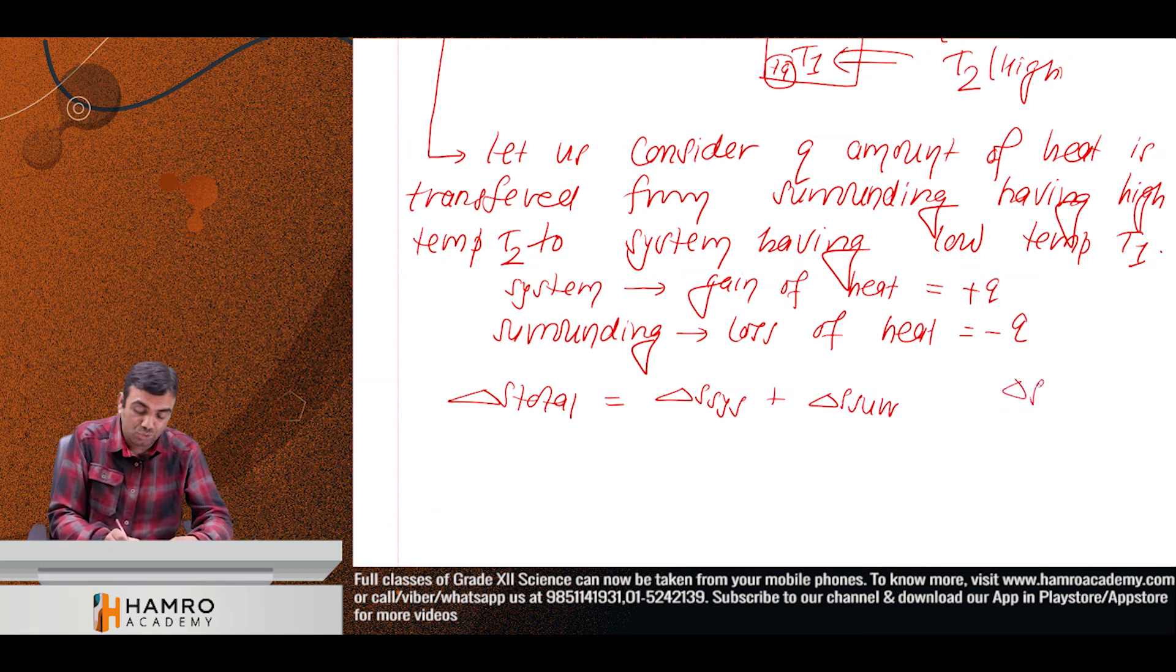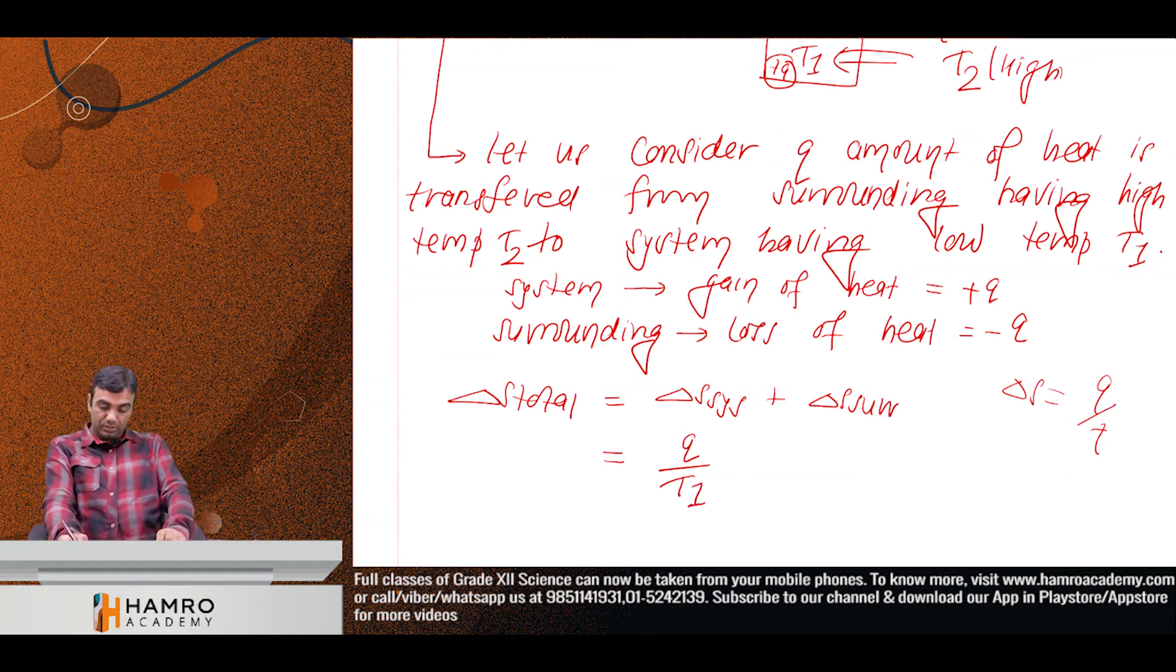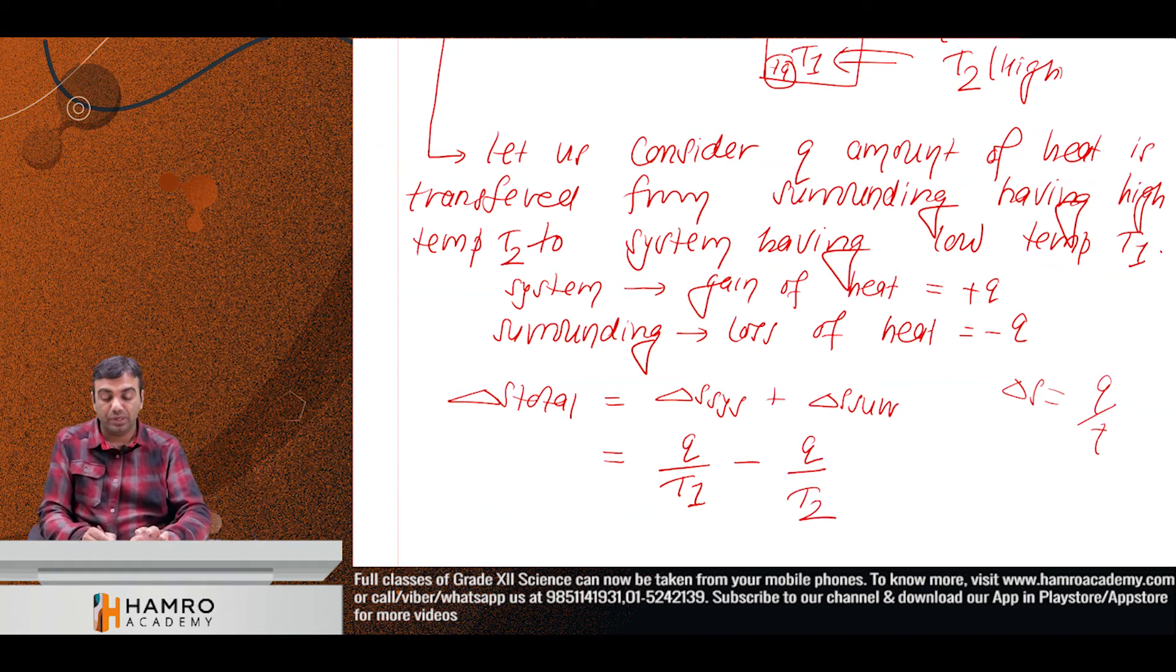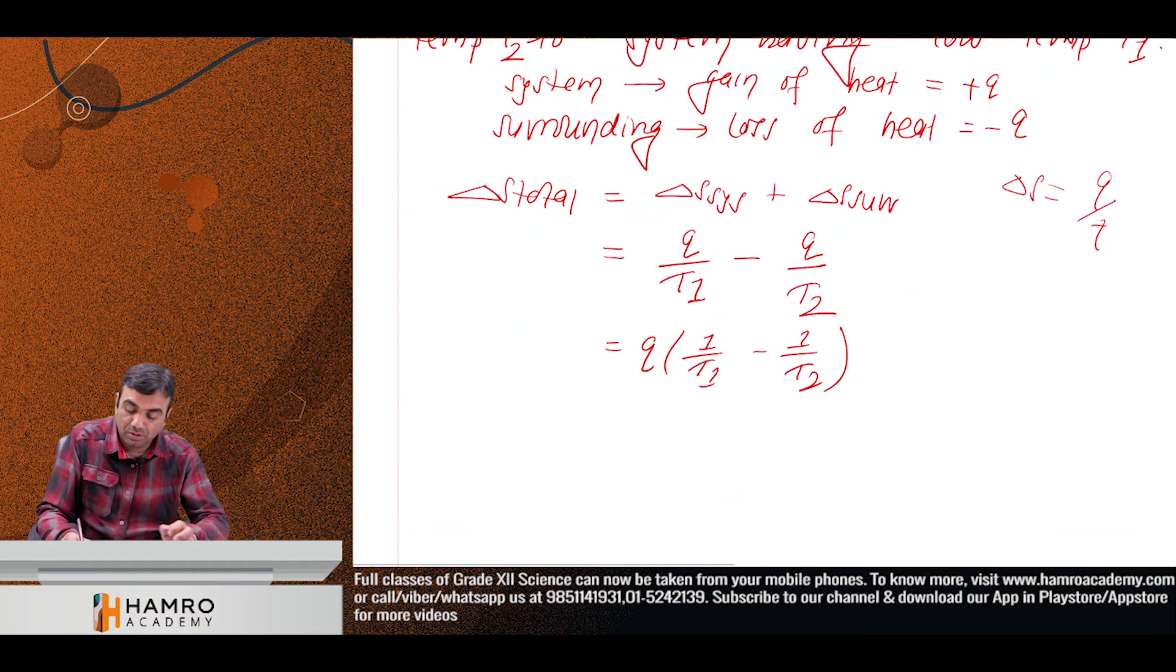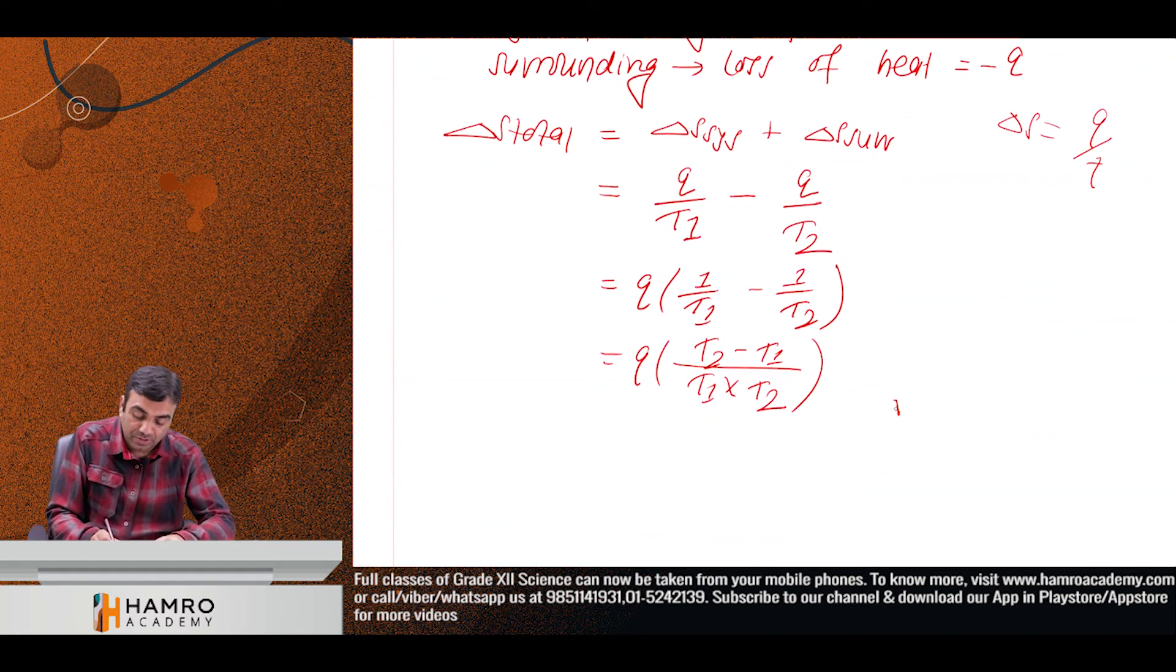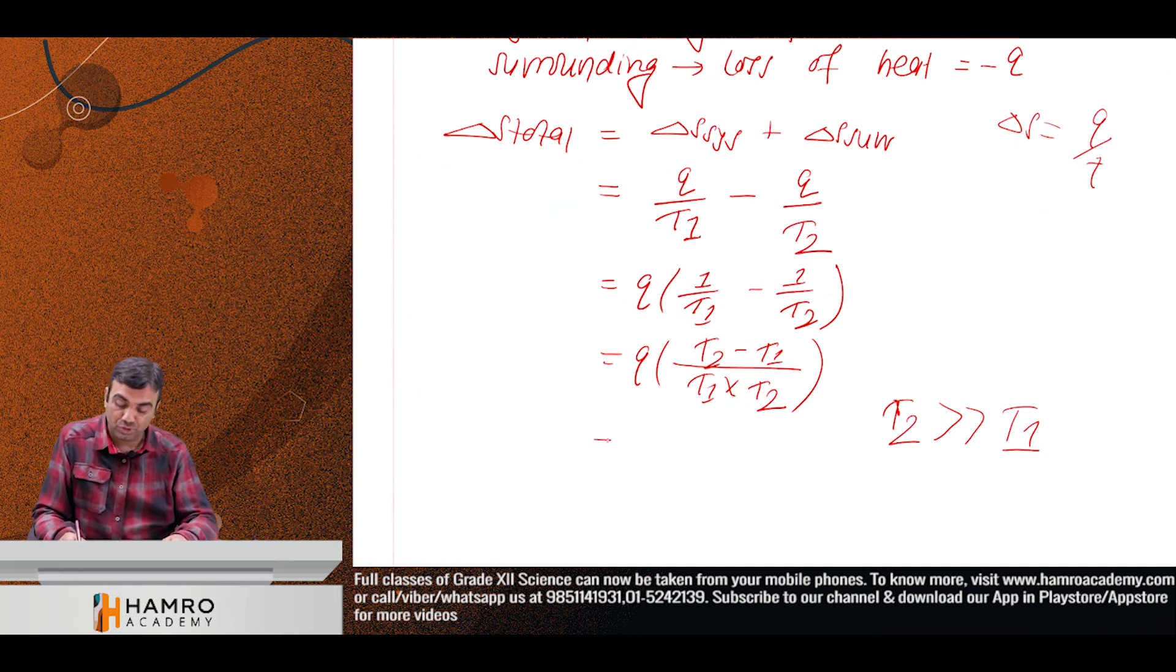Define del S equals to Q by T1. Q by T1. Then surrounding, Q is T2. Surrounding like negative heat loss. So Q common, 1 by T1, 1 by T2. So Q equals to Q, T1 times T2, T2 minus T1. T2 is higher than T1. T2 is higher than T1 plus, so del S total is positive.